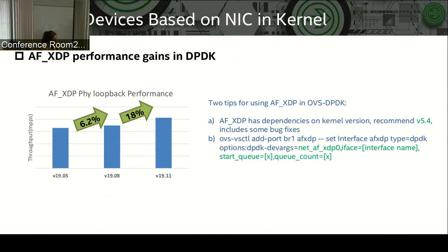There are two tips for using AF-SDP in OVS DPDK. The first is that AF-SDP has a dependency on kernel version; we recommend using the latest kernel version 5.4, which includes some bug fixes. The second tip is that if you use AF-SDP as a VDEV port in OVS, you need to specify the interface name and queue range in the device parameters, as shown in the command listed here.